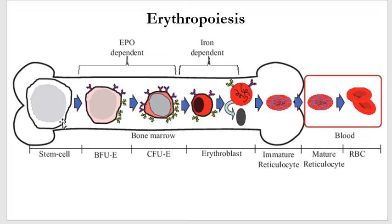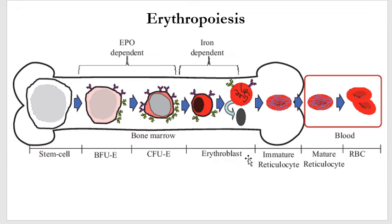Then we said we had precursor cells. The component which follows is mostly dependent on iron. But from the stem cell to that point, this one is dependent on erythropoietin. So once we have what we call the proerythroblast precursor, we now go into the erythroblast stage, which is iron dependent. In this stage, we have an early erythroblast phase where there is accumulation of hemoglobin as we go on.